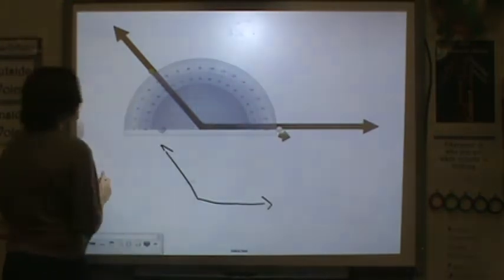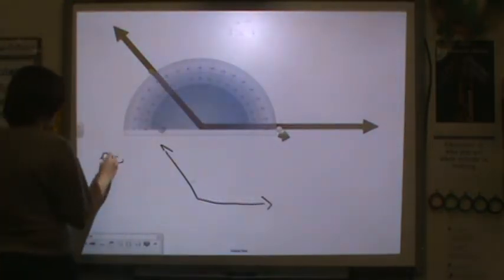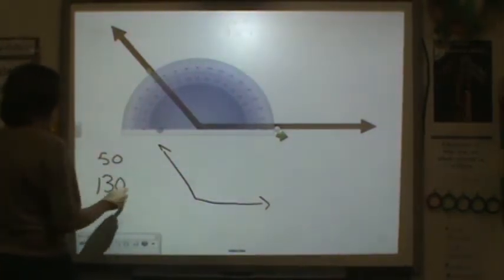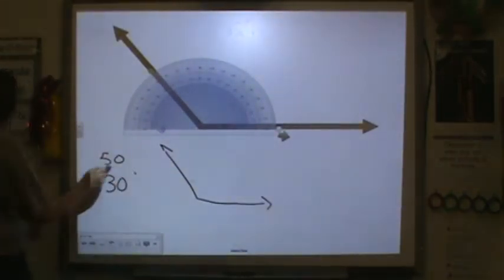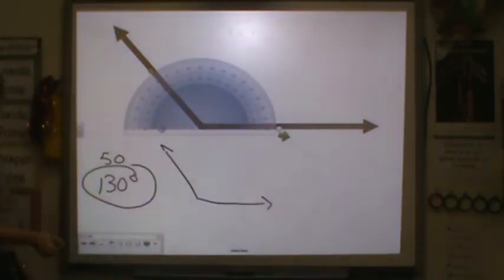So my choices on my protractor are 50 or 130. Well, because it's wider than a 90 degree angle, it has to be 130 degrees.